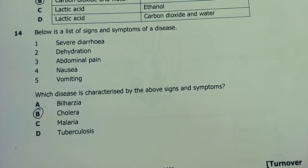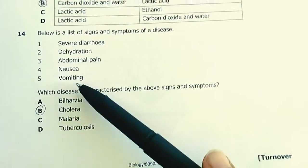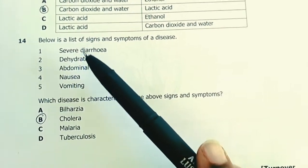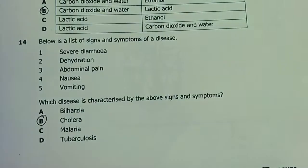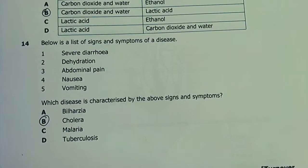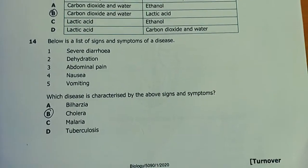Question 14. Below is a list of signs and symptoms of a disease: cholera, vomiting, nausea, abdominal pain, dehydration, severe diarrhea. You've been attacked by Vibrio cholerae. So cholera is the disease.